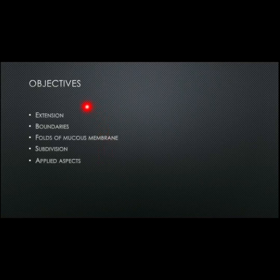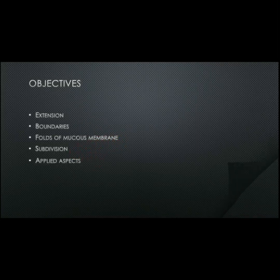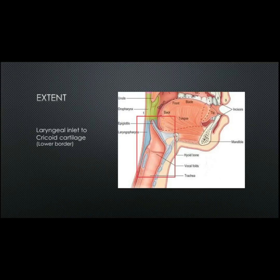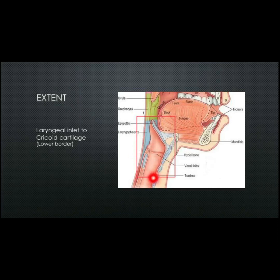The extensions, boundaries, folds, subdivisions, and applied aspects. Let's start with its extent. The laryngeal cavity extends from the laryngeal inlet to the cricoid cartilage. The laryngeal inlet opens into the laryngopharynx and ends at the lower border of the cricoid cartilage, which is followed by the trachea.